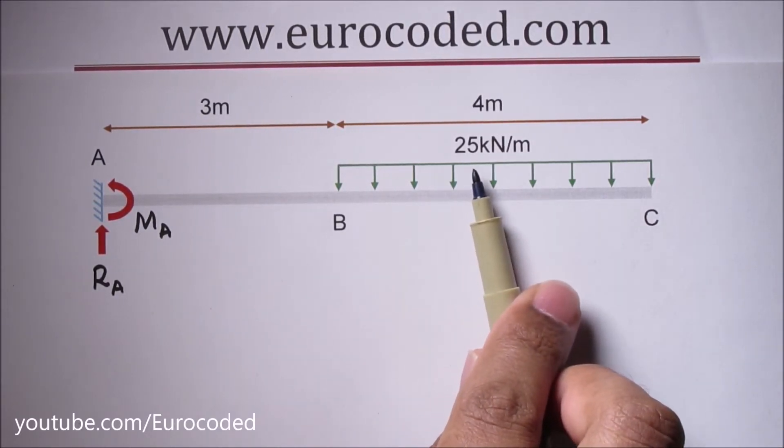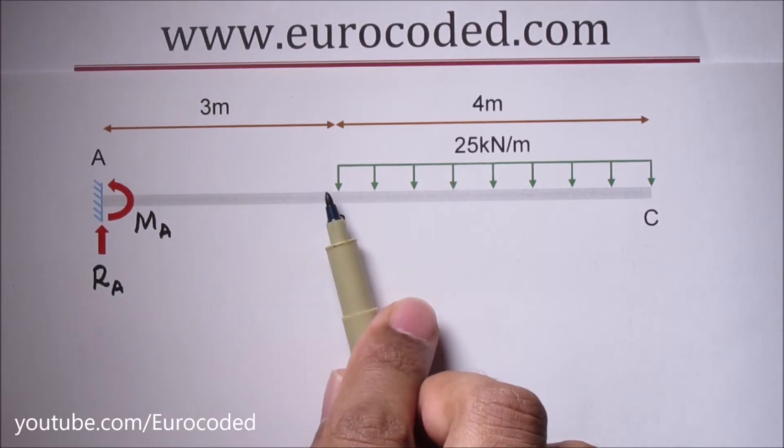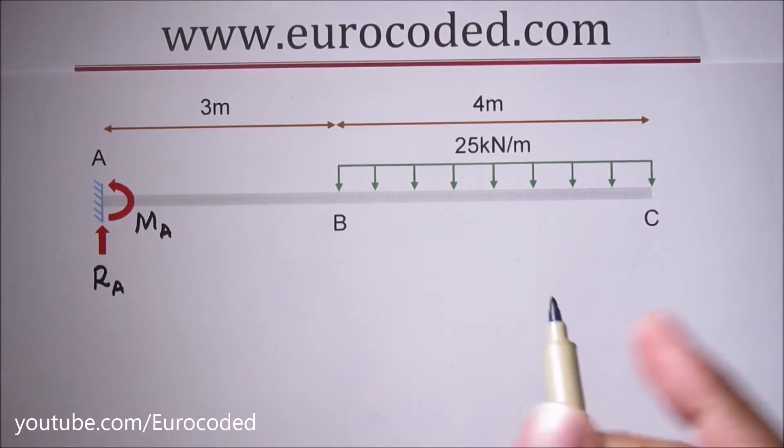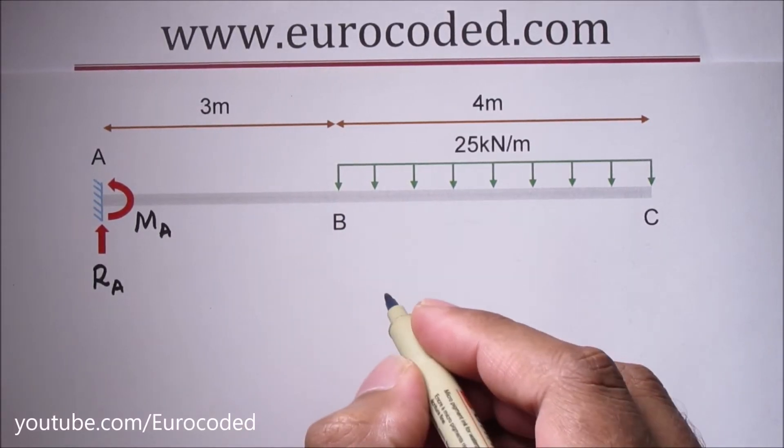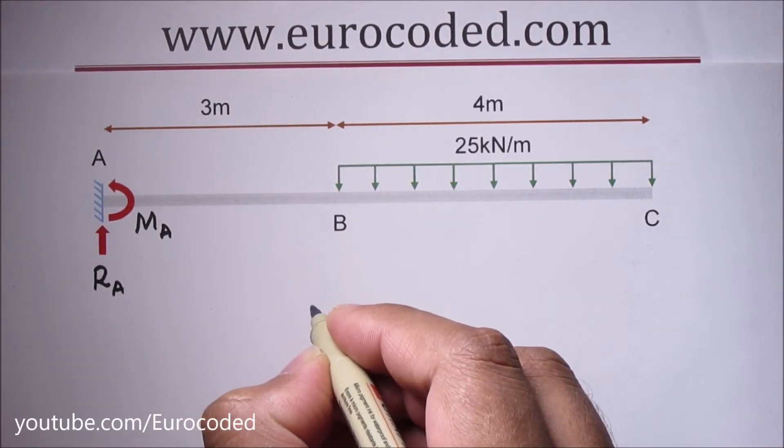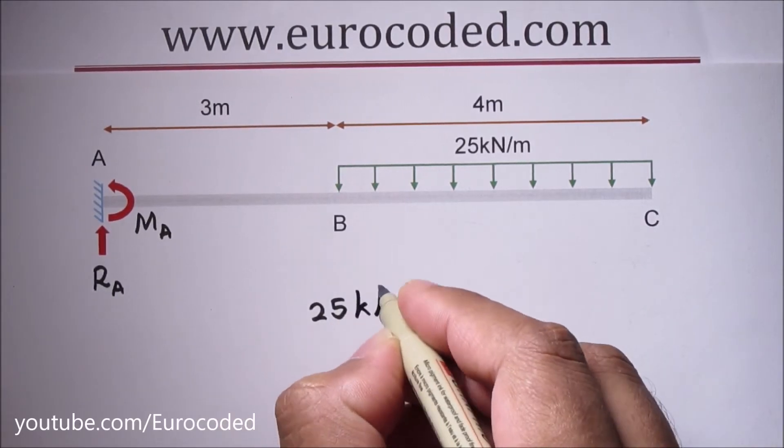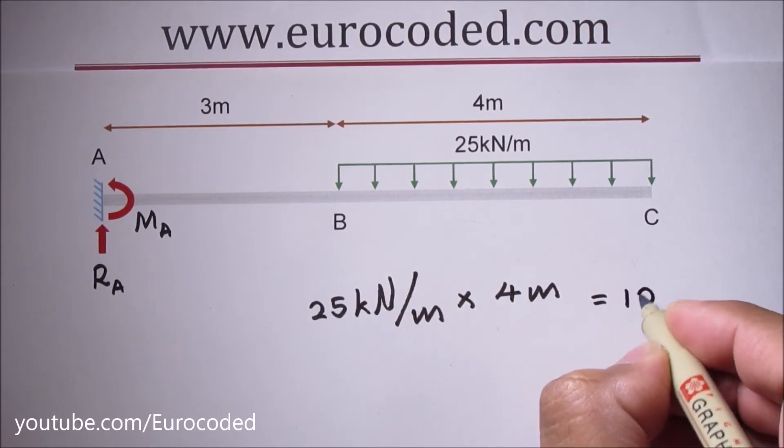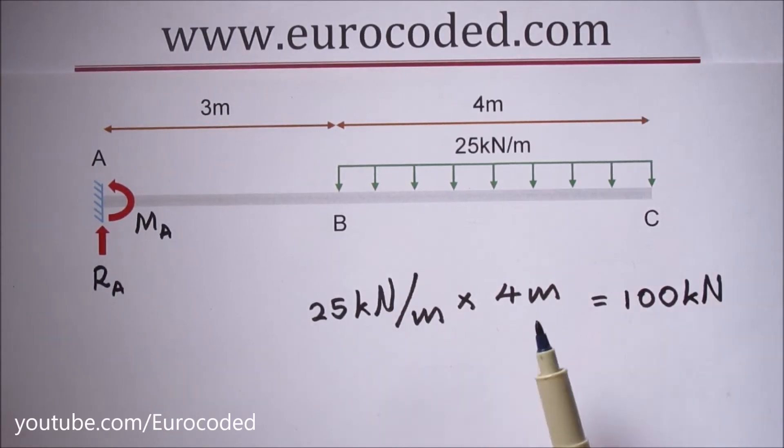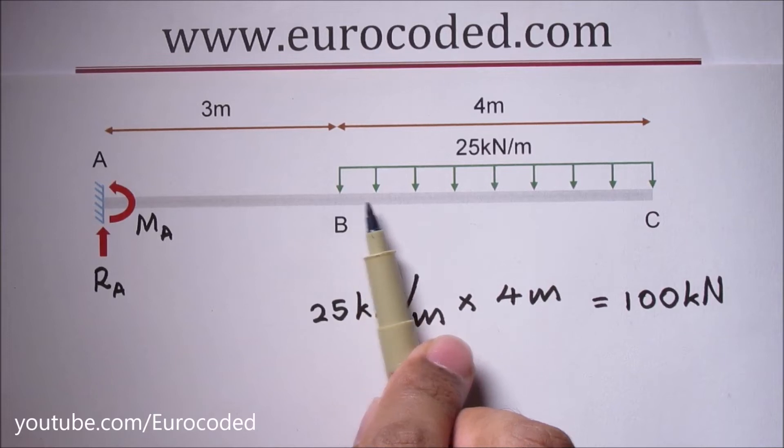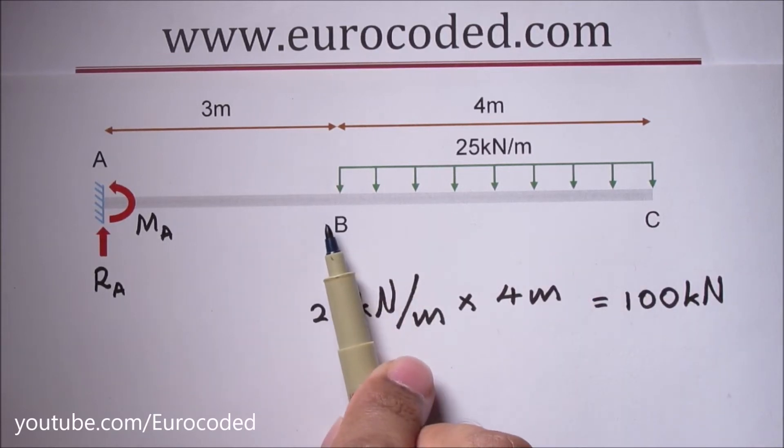We have 25 kN per meter uniformly distributed load acting over 4 meters. Therefore we can calculate the magnitude of the equivalent point load. The magnitude would be 25 times 4 which is equal to 100 kN and this point load would be located at the center of BC.